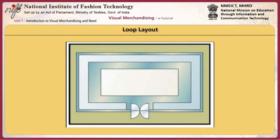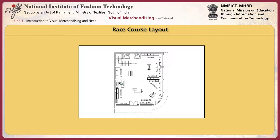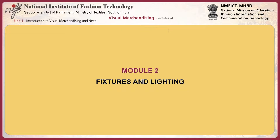The loop layout is also called a race course layout. This flow plan is adopted by Peter England stores. Departments are on the right and left to encourage circular movement of the customer. It is mostly seen in discount or department stores.